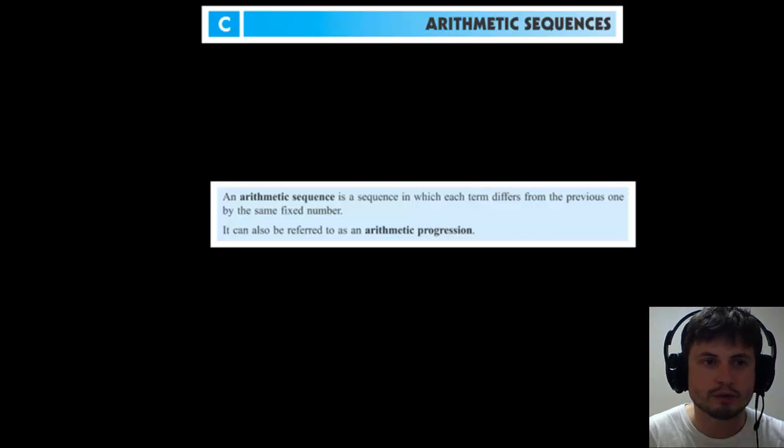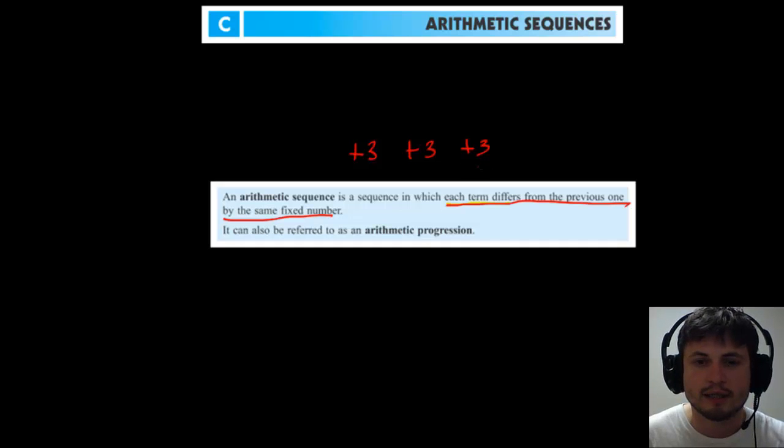Essentially this is the book definition and it says that an arithmetic sequence is a sequence in which each term differs from the previous one by the same fixed number. It can also be referred to as arithmetic progression. So the key here is a sequence where every term differs from the previous one by the same fixed number. So this is what we talked about. This is when you add the same number, for example number 3, to every term to make the next term.